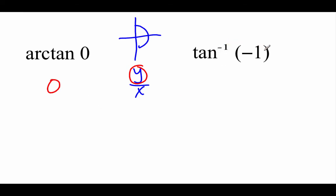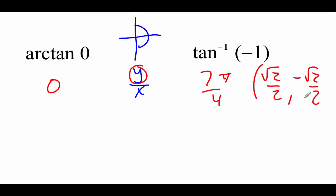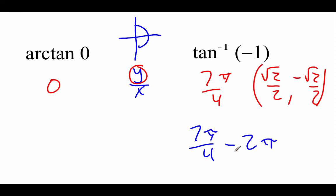For the inverse tangent of negative 1, focusing on the right half, we need y over x to equal negative 1, meaning the top and bottom are equal in magnitude but one is negative. The angle 7 pi over 4 in the fourth quadrant has ordered pair root 2 over 2 comma negative root 2 over 2, giving a tangent of negative 1. But 7 pi over 4 isn't between negative pi over 2 and pi over 2, so we subtract 2 pi: 7 pi over 4 minus 8 pi over 4 gives negative pi over 4, which is our answer.